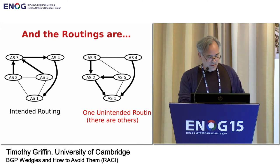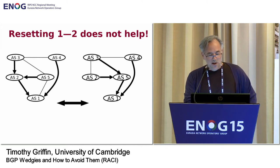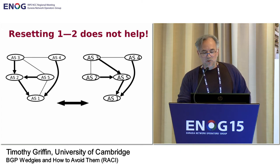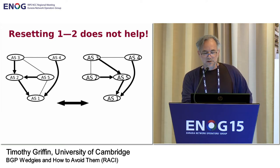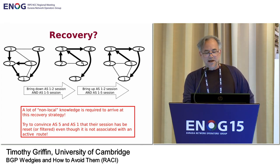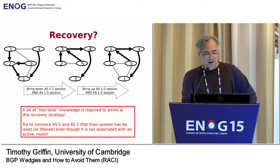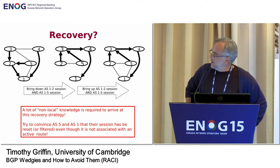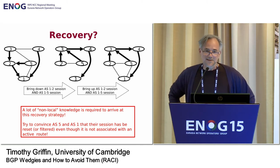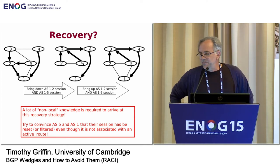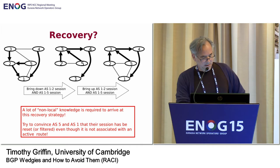It's very difficult — you need a lot of communication between the network operators. If you just reset the one-to-two session, you'll just bounce over to the other routing, and resetting that session repeatedly will just bounce you back and forth between the two solutions. What you need to do is bring down both the one-to-two and the one-to-five sessions and then bring them back up. It's going to be very difficult to convince AS5 to do that if it's hostile to your needs, and very difficult to debug this problem in a distributed environment when one link is in Moscow and the other is in Tokyo.